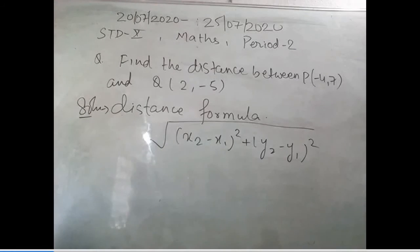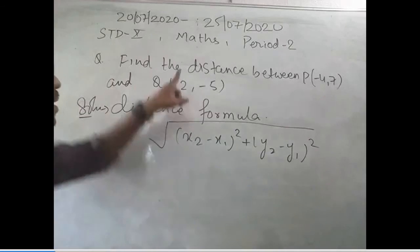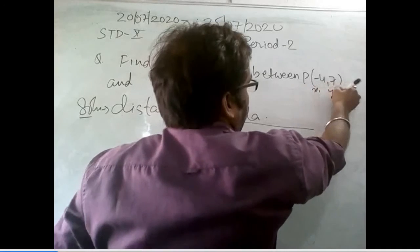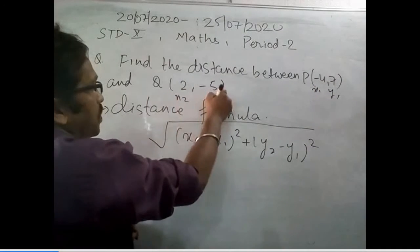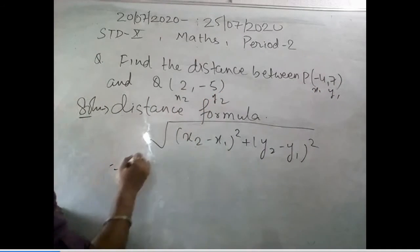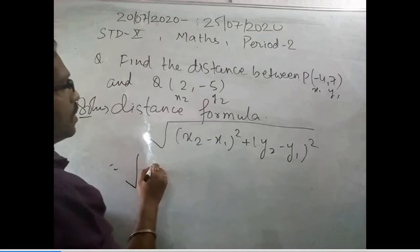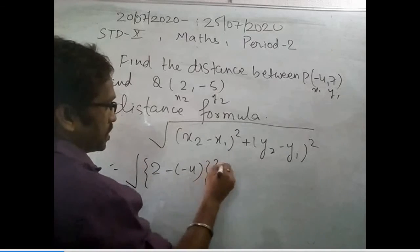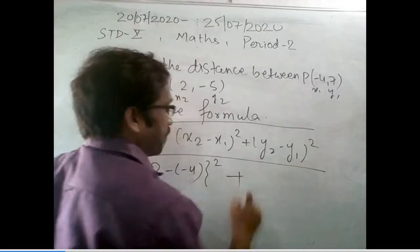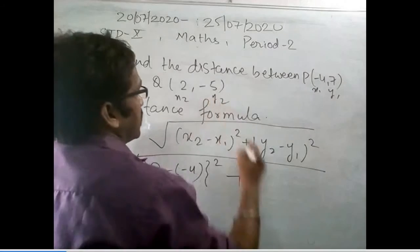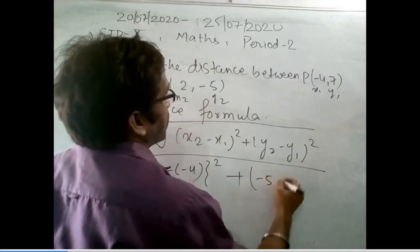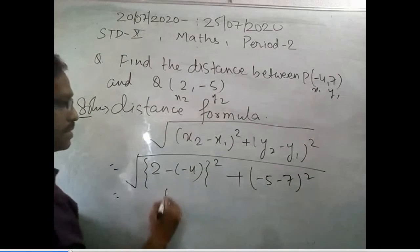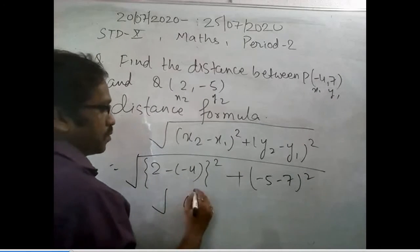x2 is well known to us, and x1 is also well known to us. So we have to just replace the values to find the solution. x2 is equal to 2, and my x1 is minus 4. What is my y2? My y2 is minus 5. And what is my y1? That is equal to 7. From the formula it will become minus 7.